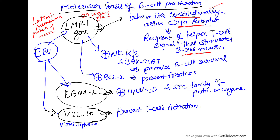Second, LMP1 stimulates the NF-κB and JAK-STAT pathways, promoting B cell survival. It also stimulates BCL2, thereby preventing apoptosis. So these are the three actions of LMP1: first, it acts as a constitutively active CD40 receptor promoting B cell growth; second, it stimulates NF-κB and JAK-STAT; and third, it stimulates BCL2.